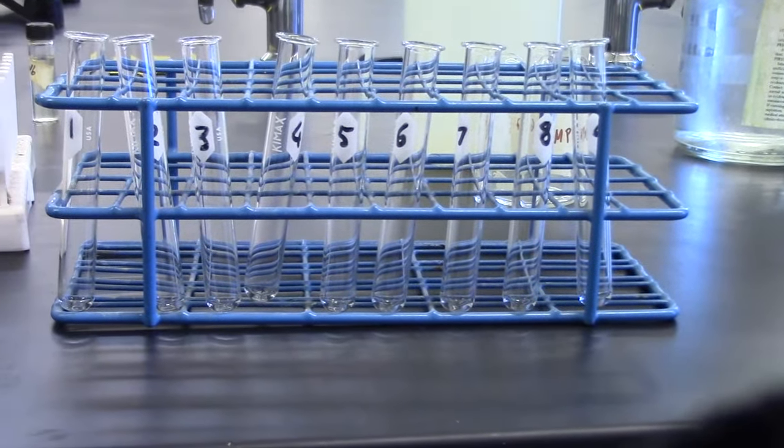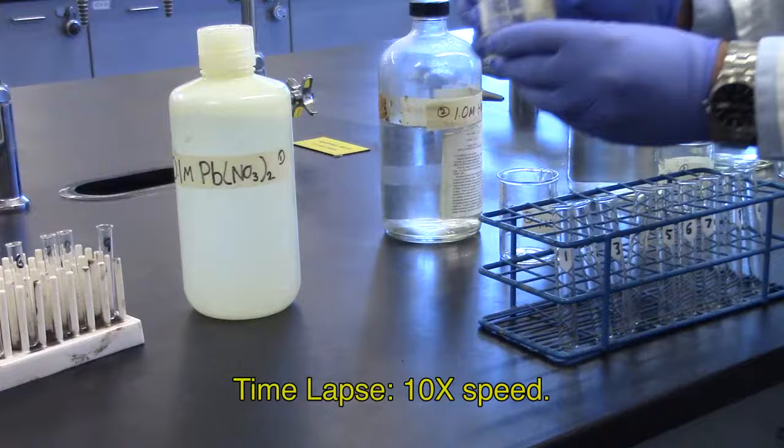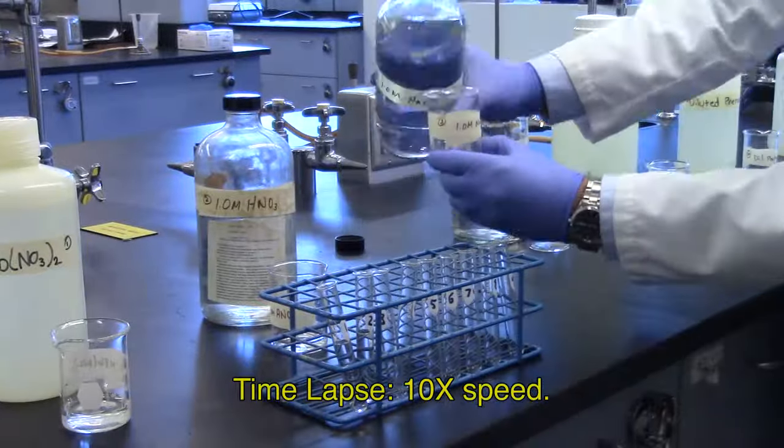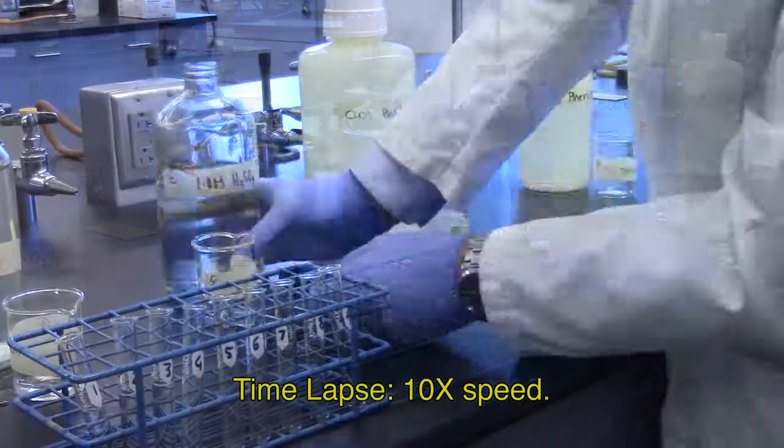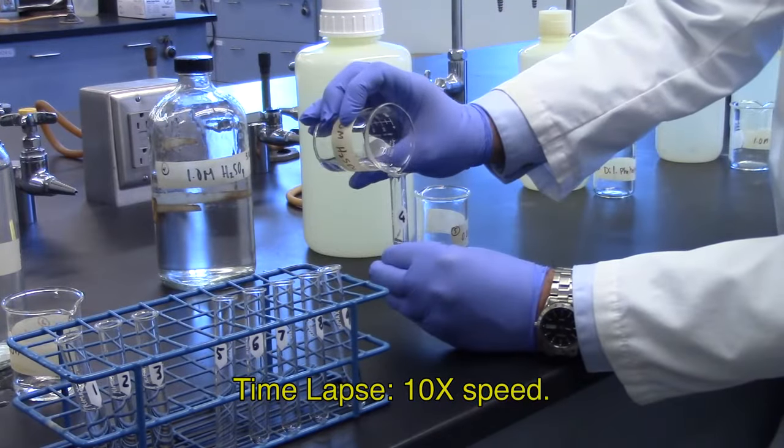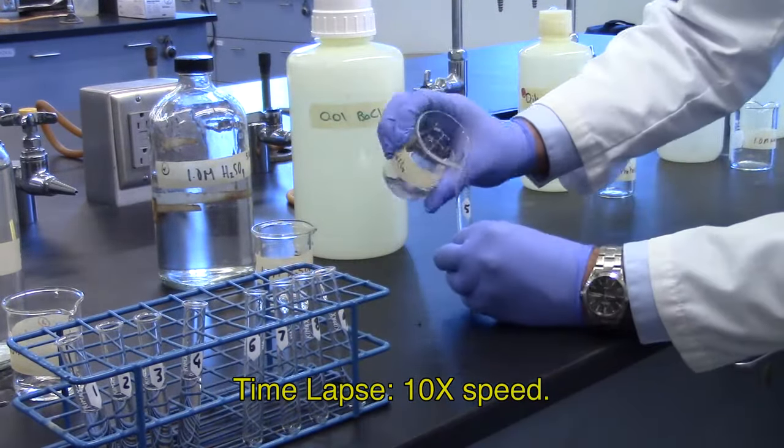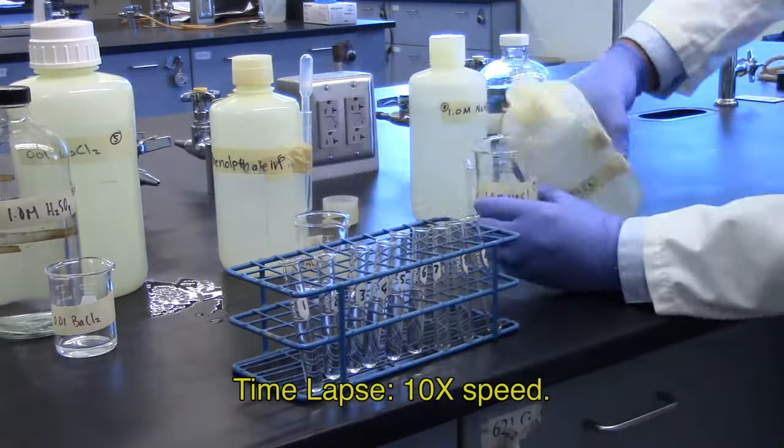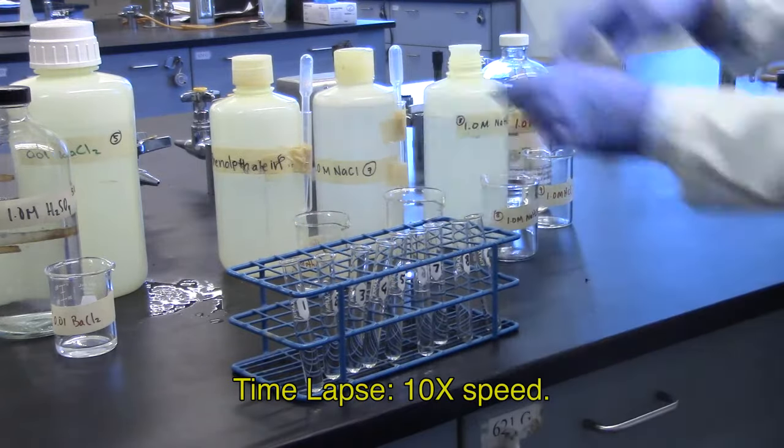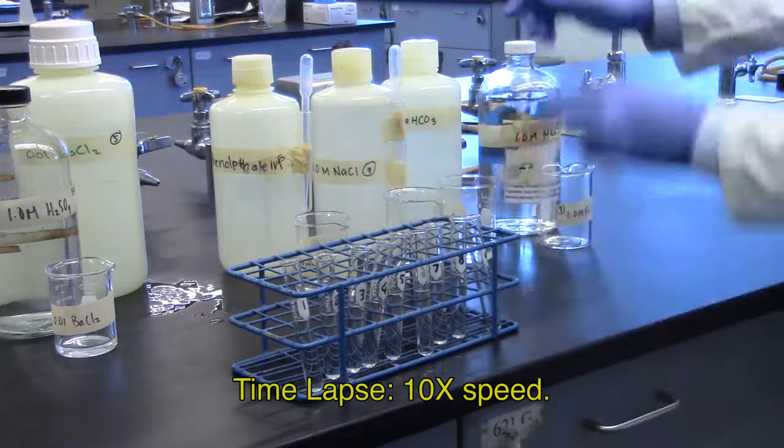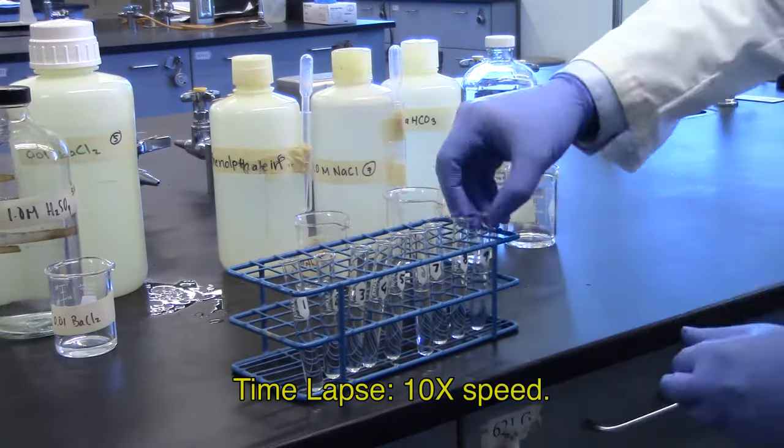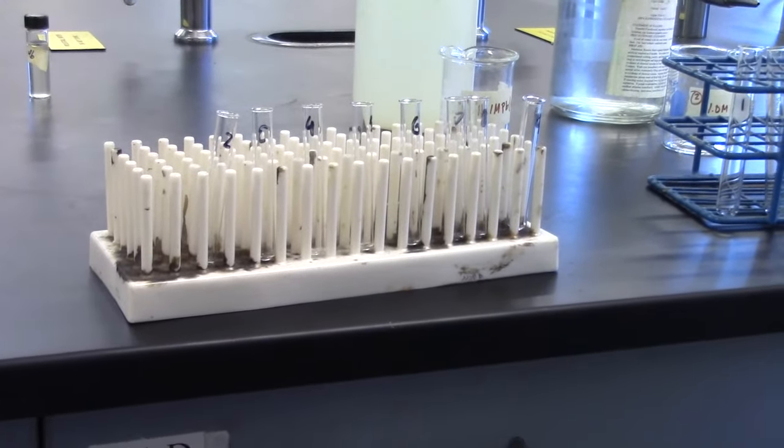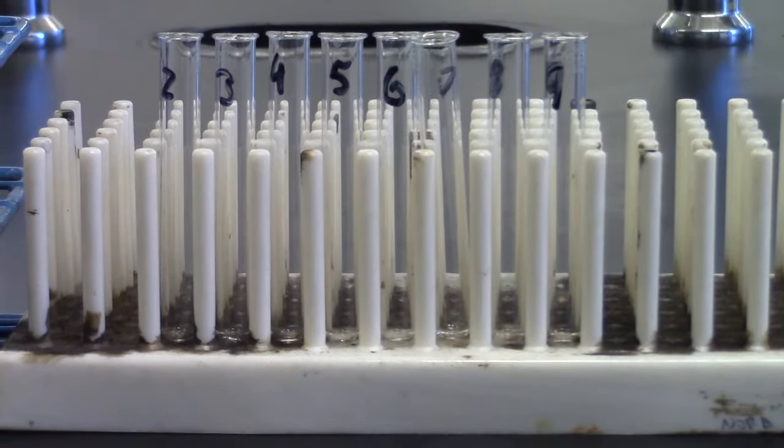Label nine medium test tubes, one through nine. Fill each test tube with the solutions on the label, about one-third full. Note that each solution is clear and colorless. Test tube one is set aside for the unknown. Test tubes two to nine are placed in a test tube rack.